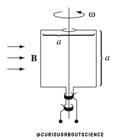So we have a magnetic field B going to the loop, where we have length A, width A, and it's rotating at some angular velocity omega, and you can see we have a couple of contact points below it. It's a pretty cool diagram.